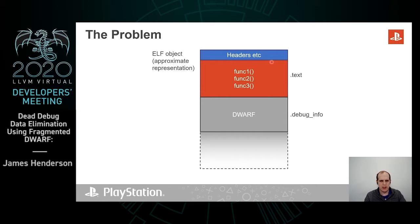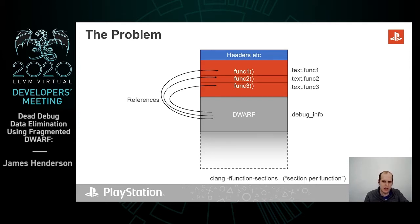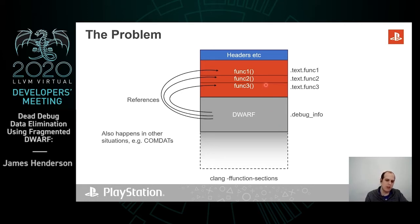What's the problem we're trying to solve here? We have an example object file — this is an ELF object, although the principles discussed should apply to other file formats too. In this ELF we have three functions as well as some DWARF, for example in the debug info section. This DWARF might reference the functions via relocations, and these functions might actually be split up into individual independent sections. Note that the debug info is not split up in any way. A similar thing might happen if you're using comdat, for example.